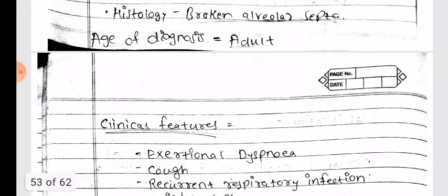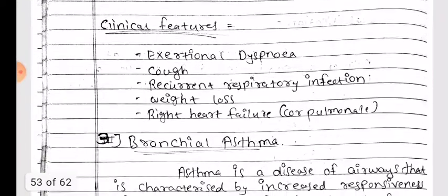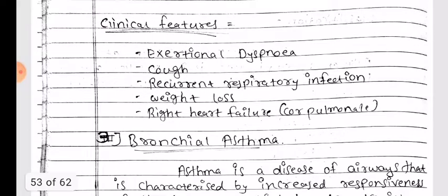Age of diagnosis: adults. Clinical features of emphysema: exertional dyspnea, cough, recurrent respiratory infection, weight loss, right heart failure, and cor pulmonale.